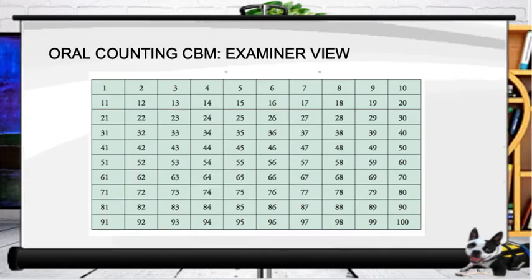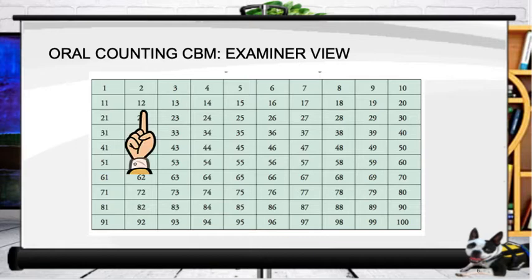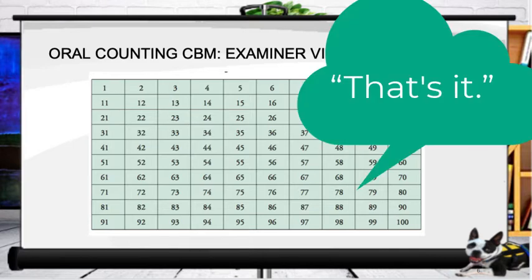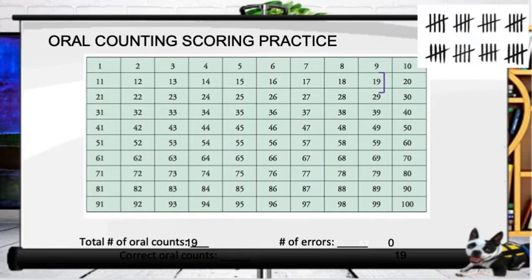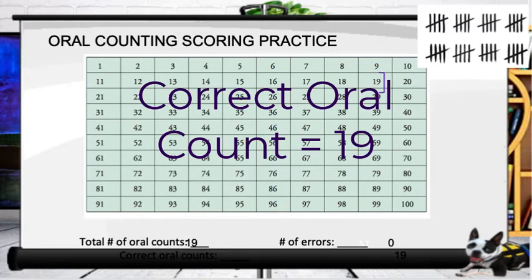The examiner's copy looks like a numbered template. Just like in reading CBM, we put a bracket where the student stopped, and any errors we tally. In this example, the total number of orally counted numbers was 19. She had zero errors, so her correct oral count is 19.